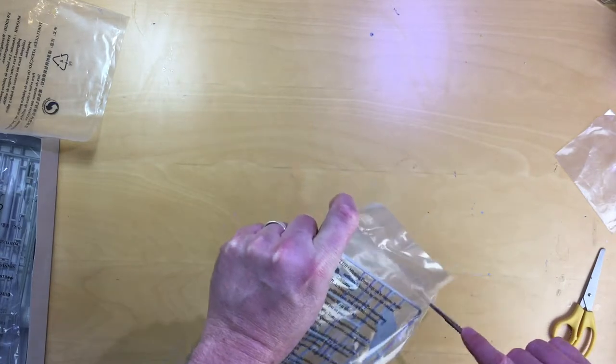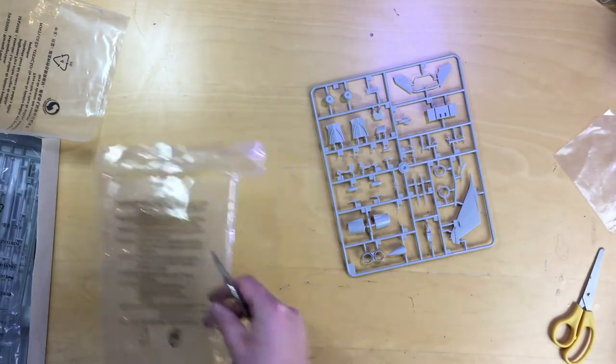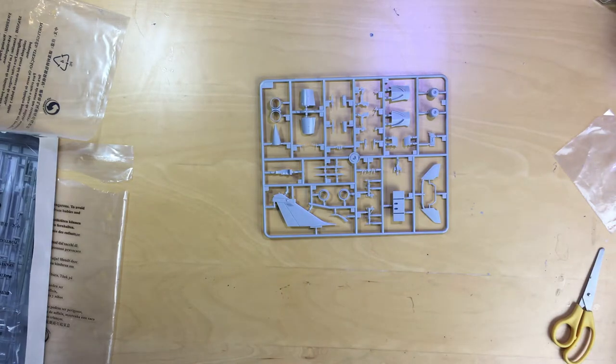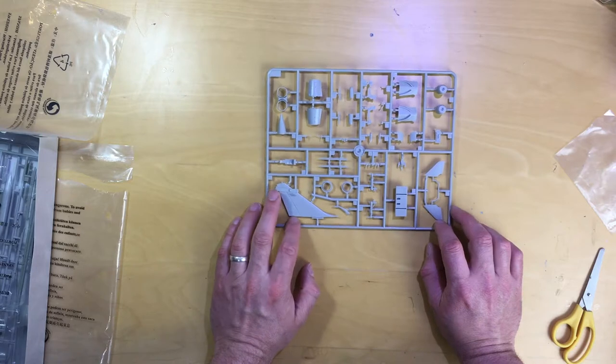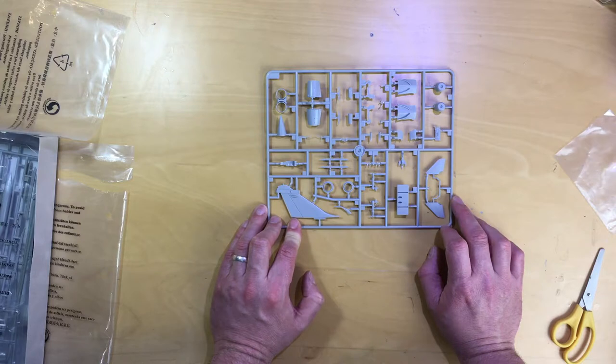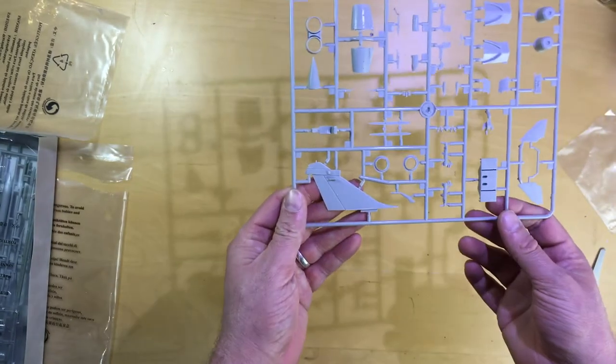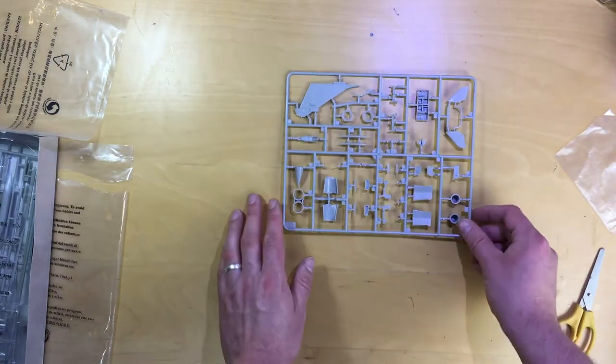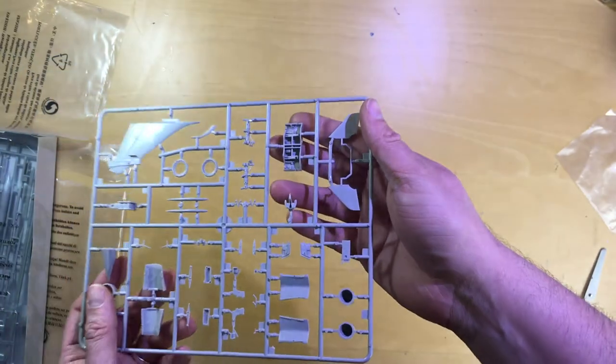Let's pop these bags open. This sprue here is vertical stabilizer and the air intakes. There's no flash whatsoever on the sprue, details look quite nice. We've got some nice riveting detail on the vertical stabilizer there. Got some nice internal detail on the main undercarriage here, some lumps and bumps in there. So that looks rather good.